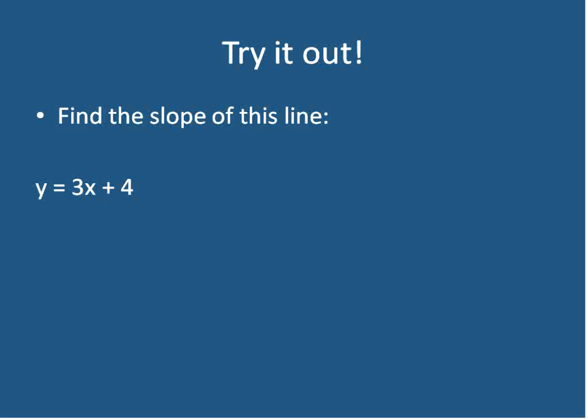So let's take a look at an actual line and try and figure it out. It really is that simple. Find the slope of this line. y equals 3x plus 4. Well, the number in front of x is 3, so 3 is our slope. If you said 3, you're right. It's really that easy.